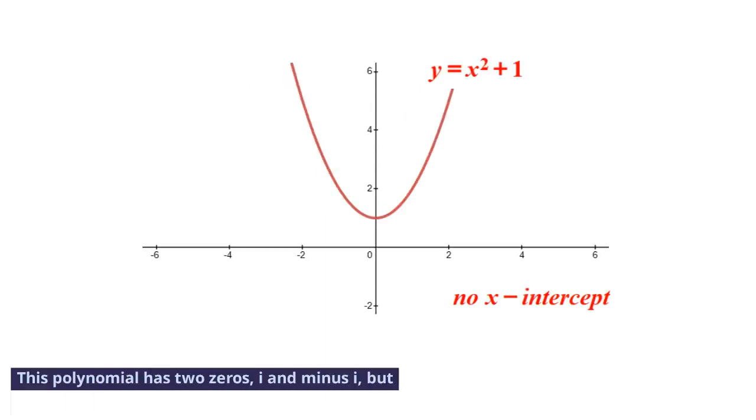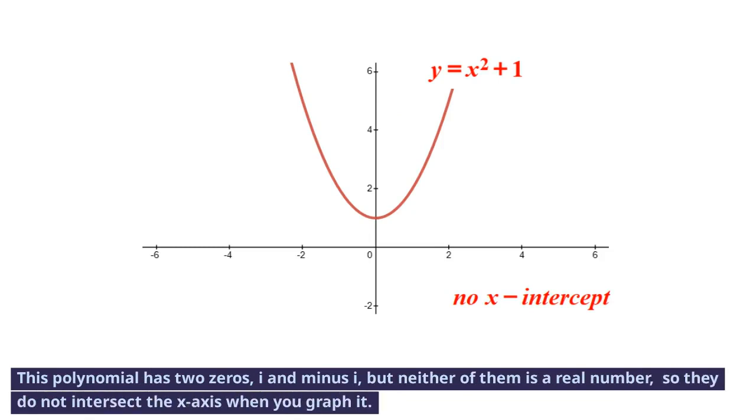This polynomial has two zeros, i and minus i, but neither of them is a real number, so they do not intersect the x-axis when you graph it.